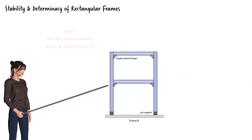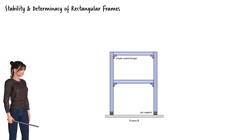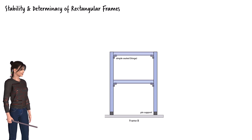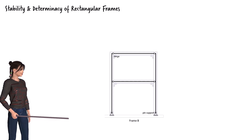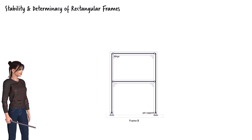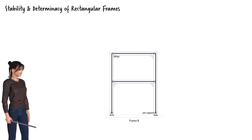Next, let's take a look at frame B. You'll notice that the two beams have simple seated connections at their ends. These connections aren't rigid, which means the beam ends can rotate relative to the columns. For our model, we'll treat these as hinges where the bending moment is zero, depicted using small circles in the line diagram. Before we jump to any conclusions about the frame's degree of indeterminacy, we need to check its stability.